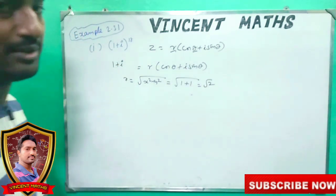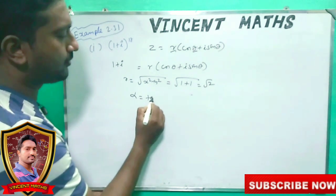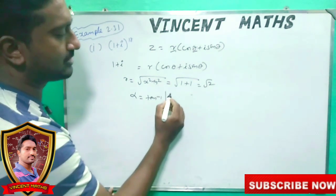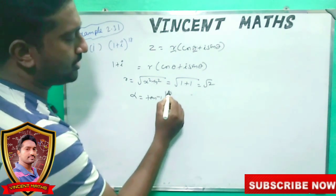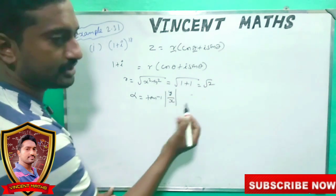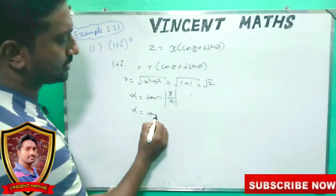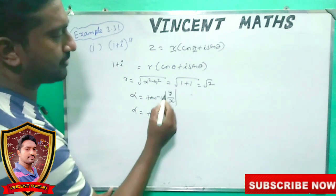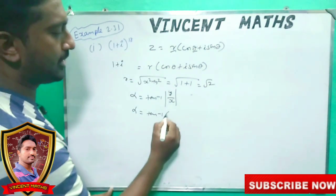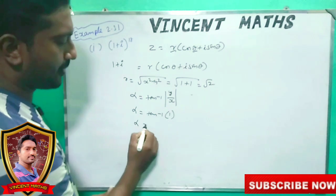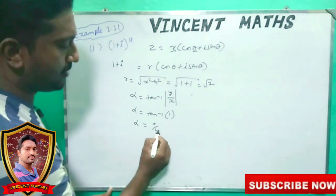Theta value. What is the value of alpha? Tan inverse of y by x — this is the formula. Alpha equal to tan inverse of 1, which from the tan table gives root 2, that is pi by 4.